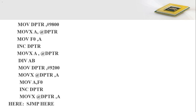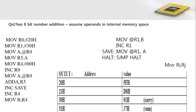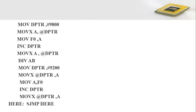This example demonstrates the usage of DPTR for accessing external memory, while the previous program example was for accessing internal memory. One more important point: for internal memory space we use 8-bit address information, and for external memory addressing we use 16-bit address information.